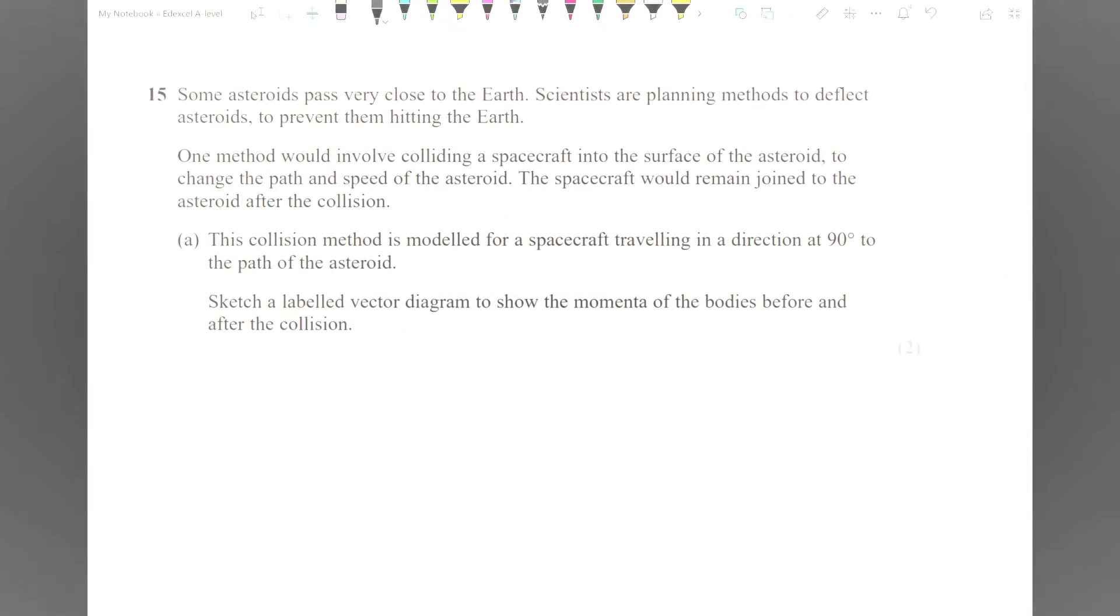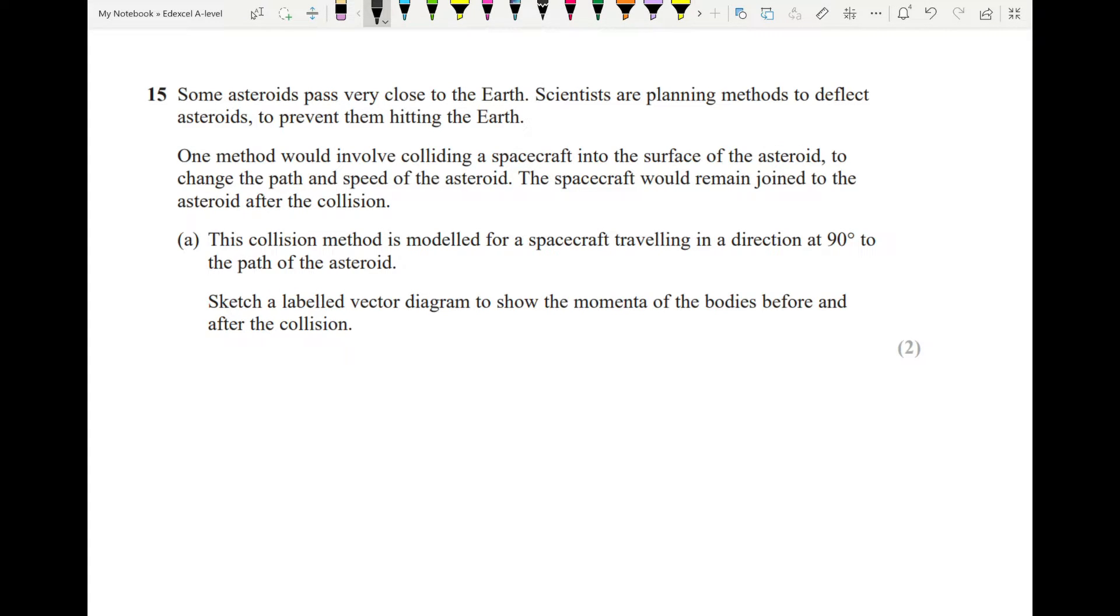The second question I'm going to do today involves momentum, and this is actually very relevant to something that happened recently. This is about deflecting the path of an asteroid that is coming close to the Earth. The first part gives you some blurb about colliding a spacecraft into the surface of the asteroid to change the path. They would remain joined after the collision. When they tell you that, that gives you clues. If they're joined together after, we know it's an inelastic collision. So if we're going to calculate kinetic energy, we know it's not going to be conserved. Also, we know if we need to use the mass of the object after, it's the combined mass of the two objects before.